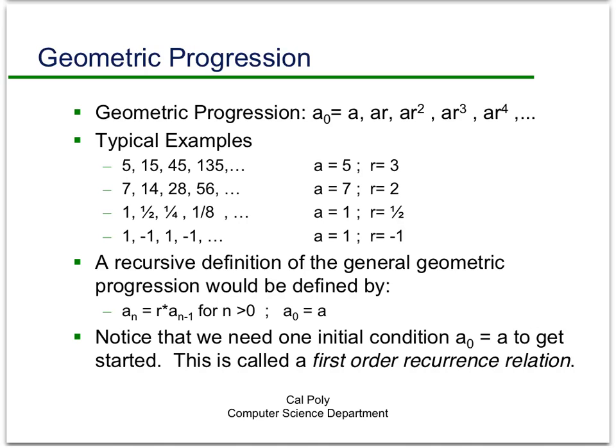There's no reason that r needs to be greater than 1. In that case, we notice instead of going up, the sequence decreases. If r is 1/2, it would go 1, 1/2, 1/4, 1/8. We can even let r be a negative number, in which case the sequence will bounce back and forth between a positive and a negative.